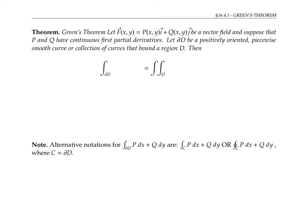With those definitions out of the way, we can state Green's theorem. Let F be a vector field with components P and Q, and suppose that P and Q have continuous first partial derivatives. We're going to use the notation ∂D to represent the positively oriented piecewise smooth curve or collection of curves that bounds a region D.